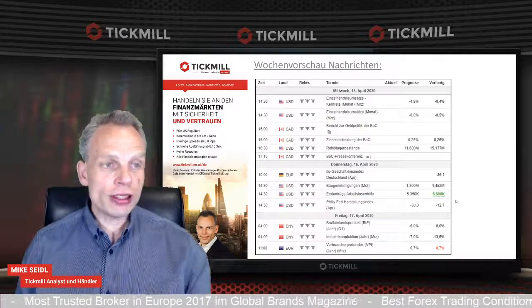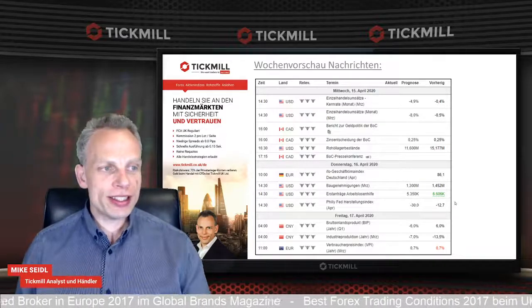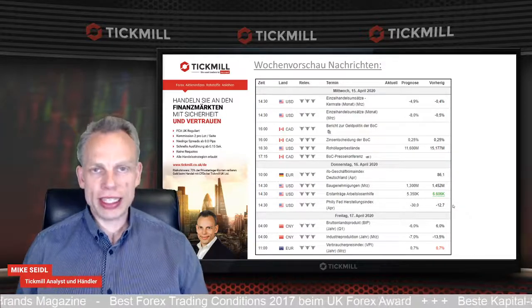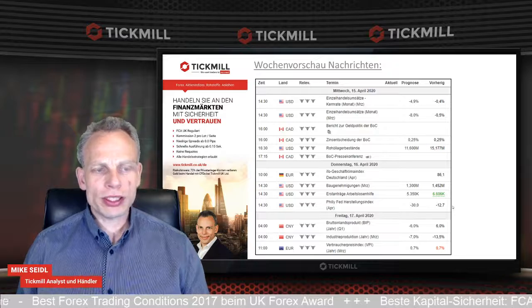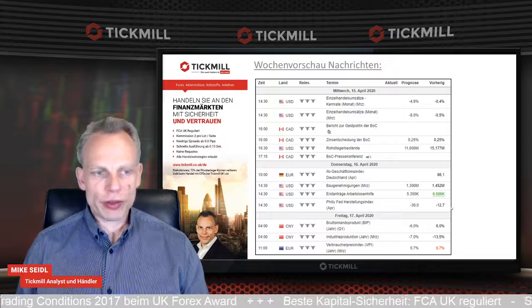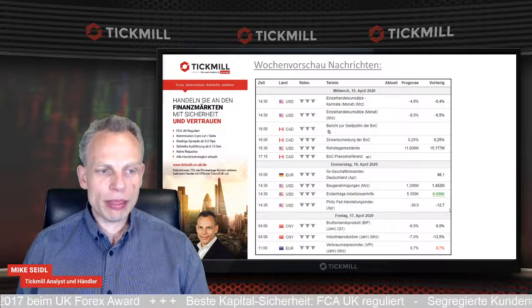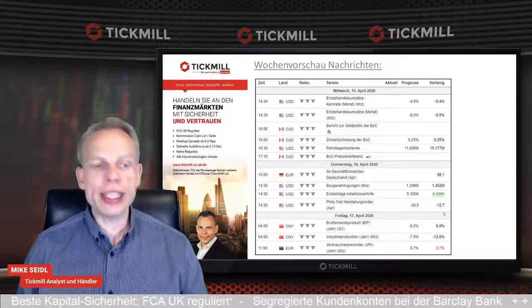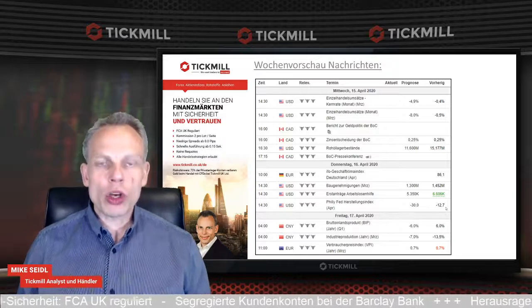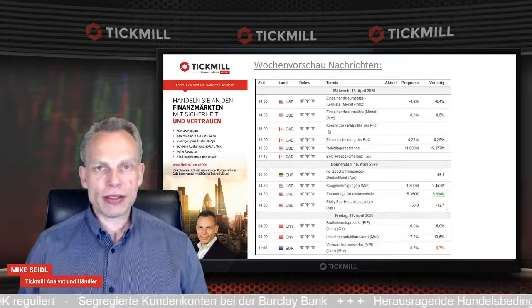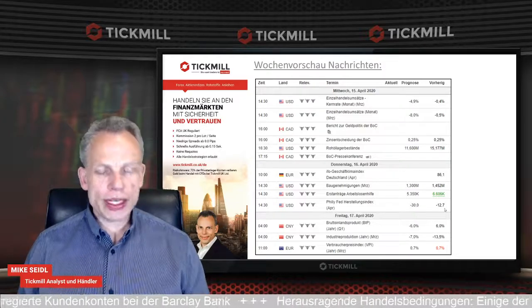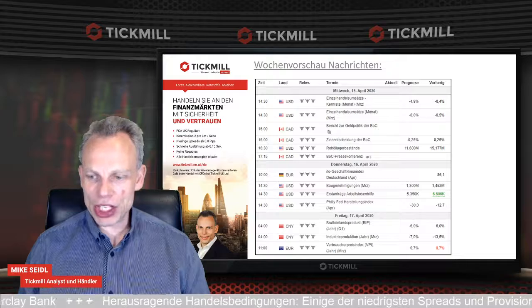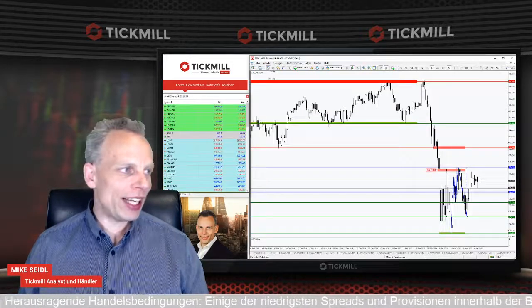Schauen wir auf die Wochennachrichten. Ab morgen eine größere Nachrichtenliste: Um 14:30 Uhr die Einzelhandelsumsätze aus den USA, dann ein Bericht zur Geldpolitik und der Zinsentscheid in Kanada samt Pressekonferenz der Bank of Canada. Donnerstag kommt der IFO-Geschäftsklimaindex aus Deutschland, aus den USA wichtige Daten rund um Bauen, Erstanträge auf Arbeitslosenhilfe sowie der Fed-Herstellungsindex. Am Freitag gibt es neue Daten zum chinesischen BIP im ersten Quartal, Industrieproduktion für März und den Eurozone-Verbraucherpreisindex.